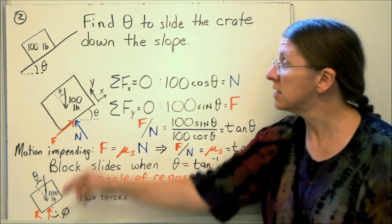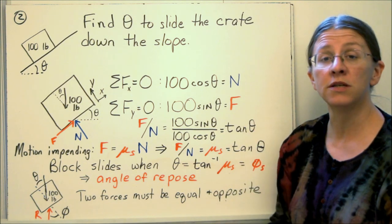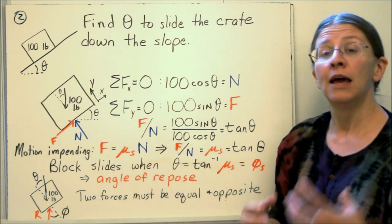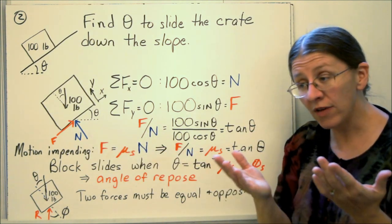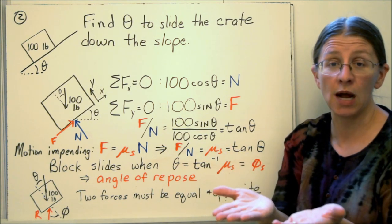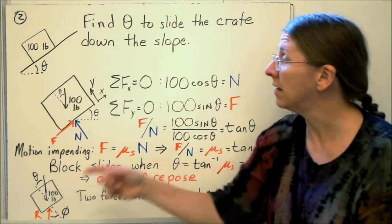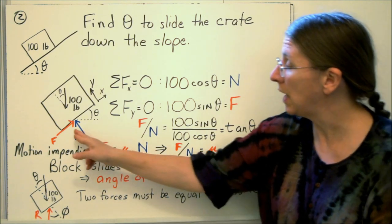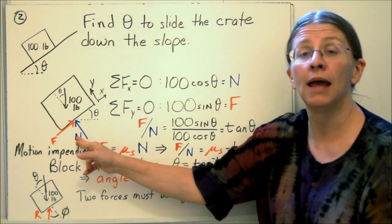And the other way you can do this is to look at a single resultant. If you take the resultant of f and n, you have to have, you only have two forces. You have r and you have w. If you only have two forces, they have to be equal and opposite. And that angle θ has to be the angle φ, which would be the angle between n and r.